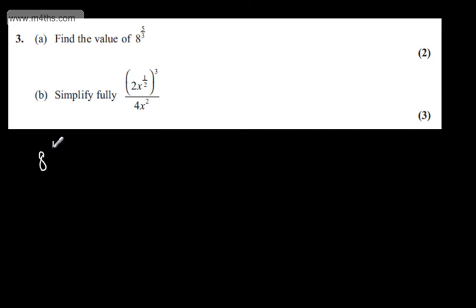I'm going to rewrite this as 8 to the power of 1 third raised to the power of 5. 8 to the power of 1 third is 2, so we raise 2 to the fifth power. 2 to the power of 5 is 32. So 2 marks in total for part A.